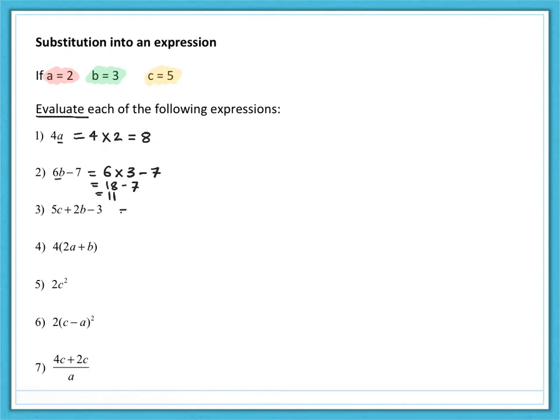Number three, we have five lots of c, which is five times five, plus two lots of b, which is two times three. Then take away the three. So evaluating each part that is 25 plus six minus three. And that comes to an answer of 28.